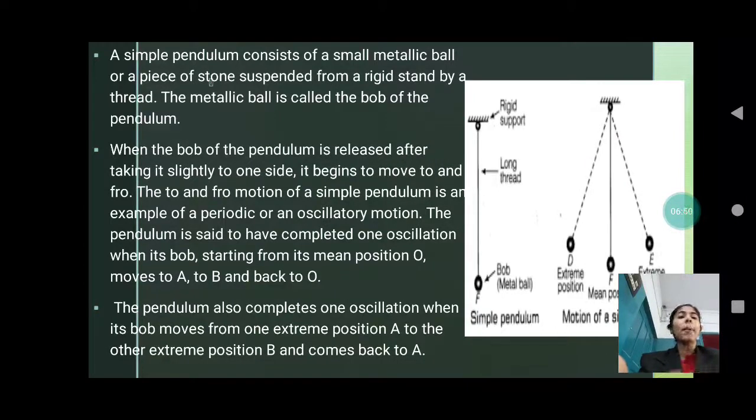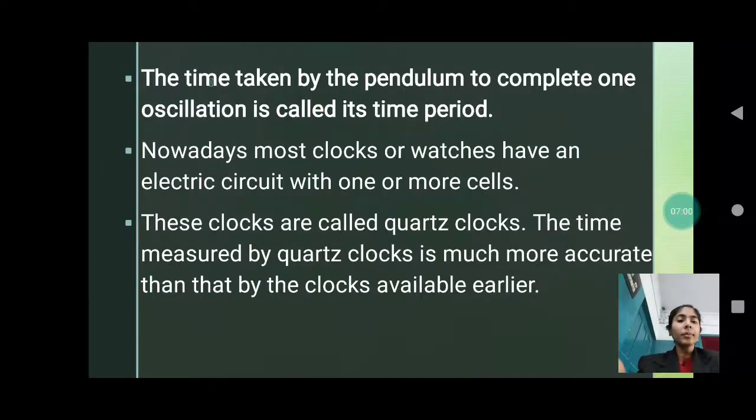The pendulum also completes one oscillation when its bob moves from one extreme position A to the extreme position B and comes back to A. The time taken by the pendulum to complete one oscillation is called its time period. Nowadays, most clocks or watches have an electric circuit with one or more cells. These clocks are called quartz clocks. The time measured by quartz clocks is much more accurate than that by the clocks available earlier.